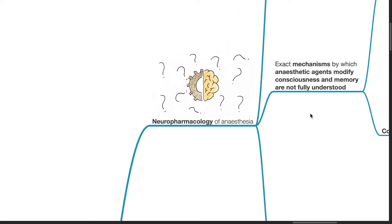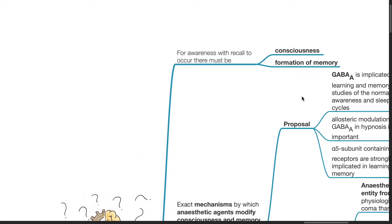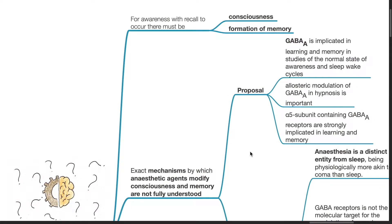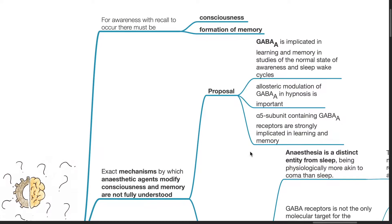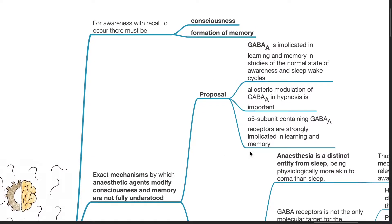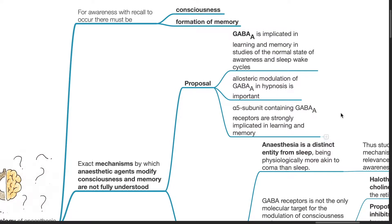Regarding neuropharmacology of anesthesia, for awareness with recall to occur, there must be consciousness and formation of memory. The exact mechanisms by which anesthetic agents modify consciousness and memory are not fully understood. It is proposed that GABA-A receptors are implicated in learning and memory in studies of the normal state of awareness and sleep-wake cycles. Allosteric modulation of GABA-A receptor in hypnosis is important. Alpha-5 subunit containing GABA-A receptors are strongly implicated in learning and memory.